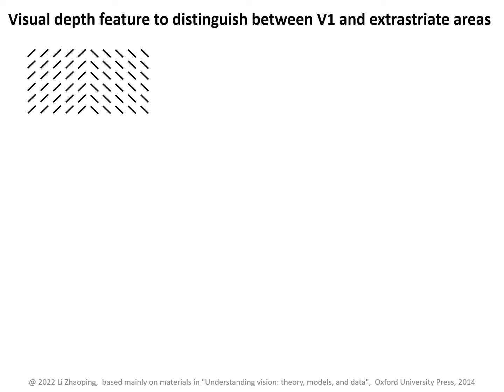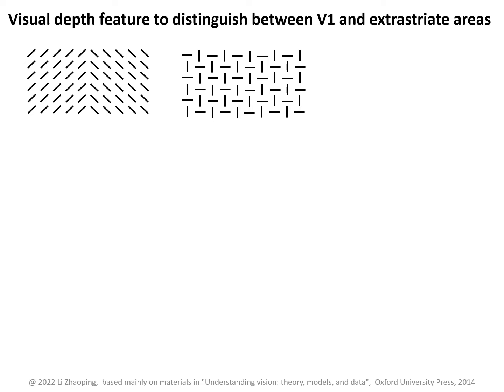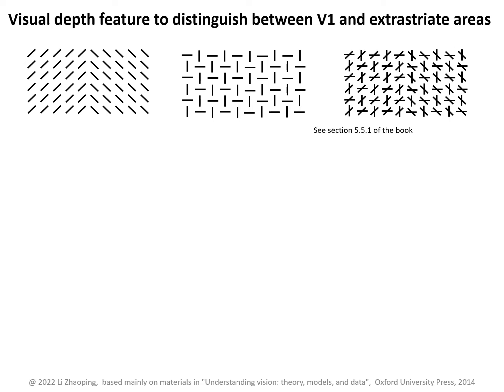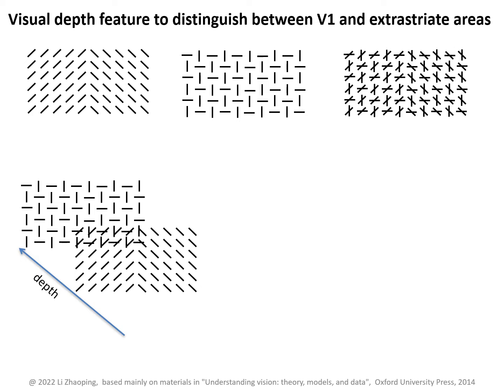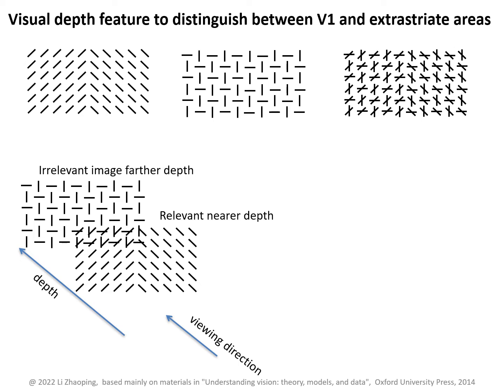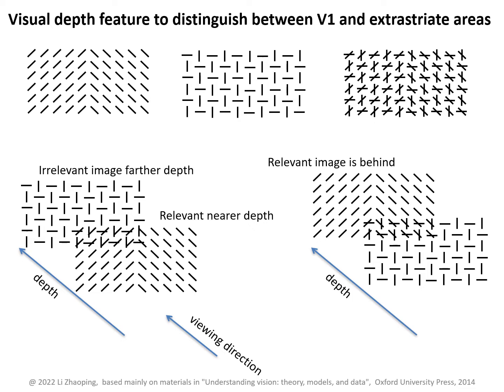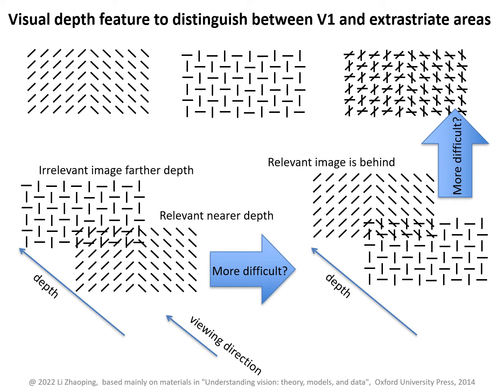We have seen that segmenting the two textures in this image becomes difficult when we superpose onto it this irrelevant image to make a composite image. By the V1 saliency mechanisms, we have understood how these irrelevant horizontal and vertical bars interfere with the task. Now we ask whether separating these two images in depth could reduce this interference — for instance, placing the irrelevant image behind the relevant one. We could also ask if swapping their depth order makes things slightly more difficult. If these different depth arrangements make a difference in the texture segmentation task, they should suggest a role for the extrastriate cortex.